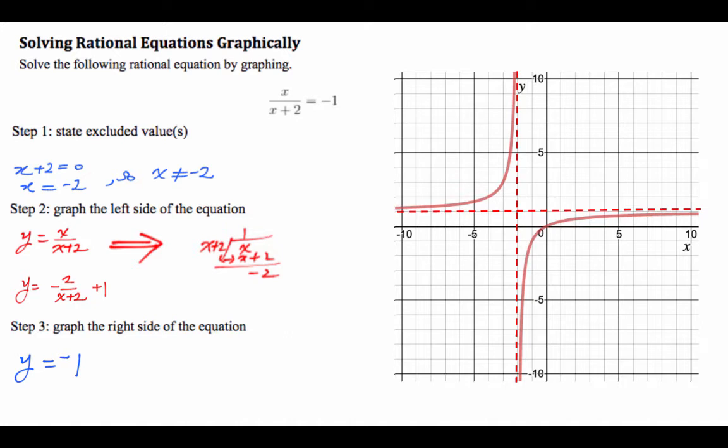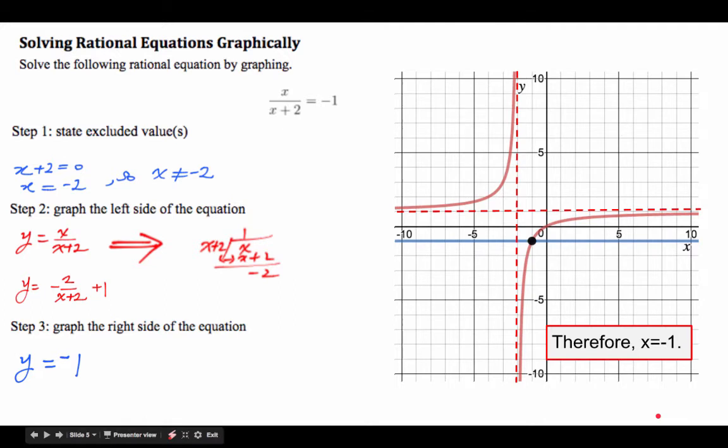When you set y equal to negative 1, you see the blue curve. Where does the blue curve and the red curve intersect? Right here. So we state that the coordinate is negative 1, negative 1. We're looking at the equation, we're looking for the x value. Therefore we say that equation is true if x is negative 1. If the answer turns out to be one of the vertical asymptotes, you say there's no solution. But because it is not, we are pretty certain the answer is negative 1.